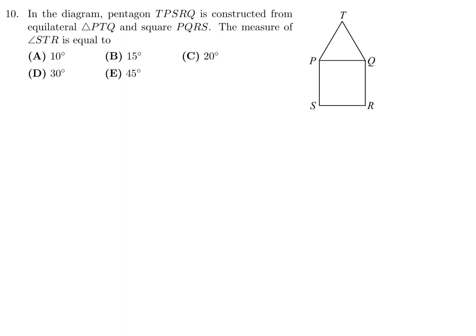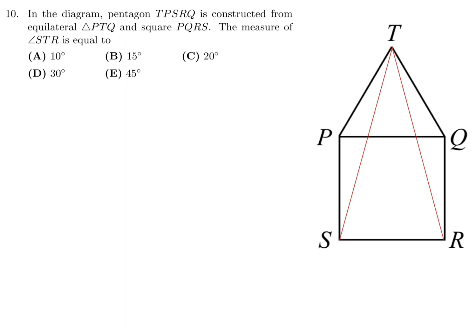In the diagram, pentagon TPSRQ is constructed from equilateral triangle PTQ and square PQRS. The measure of angle STR is: Alright, well, first let's draw STR. And now, let's start figuring this out. So, this angle obviously is 90 and this is an equilateral triangle. So, that's 60 there, 60 degrees. So, that means that this whole angle would be 90 + 60, which is 150.